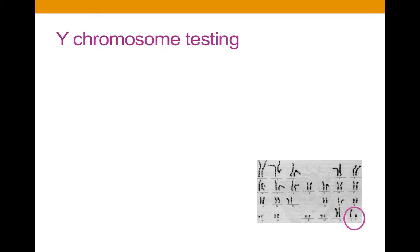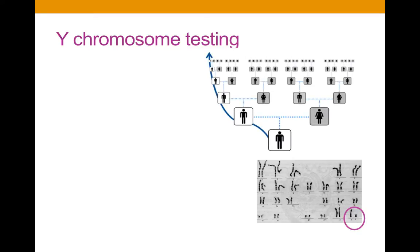The Y-chromosome is passed on from father to son in a direct line down the generations, changing slightly here and there as it goes, which makes it a very ideal tool for tracking the spread of surnames. The Y-chromosome and surnames will not always go hand in hand — many of us will have discovered that we're not descended from the people we thought we were. Of course, it can only tell us about one line of our ancestors and says very little about all the others.